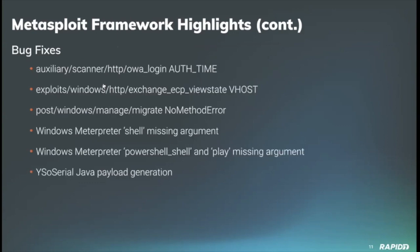We have a number of bug fixes. Community contributor TicoFu fixed a bug in the OWA login module to prevent it from failing when the auth time option is set to false. Community contributor T0N1 fixed a bug in the Exchange GCP view state module to properly use the Vhost value, allowing Metasploit to exploit targets where IIS has a host name specified in the binding section of the web application's configuration. Community contributor GotMilk fixed a no-method error found in the post Windows manage migrate module.